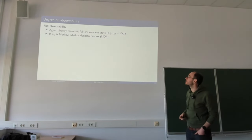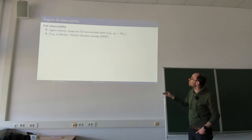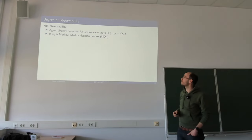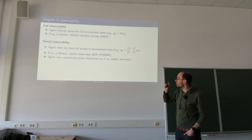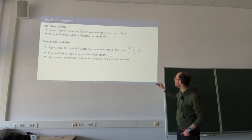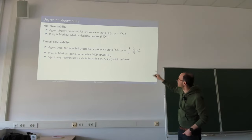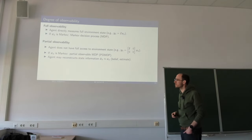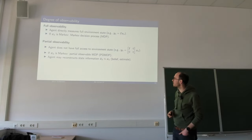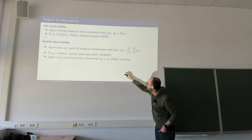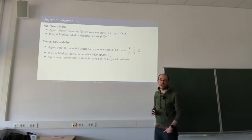This is directly linked to the observability problem. If the agent directly measures the full environment — all states accessible by measurement — we have a Markov Decision Process (MDP). If we have partial observability, where only parts of the states are made available by measurements, we get a Partially Observable Markov Decision Process (POMDP), which means we have to reconstruct the state information using an estimator or observer.